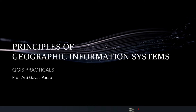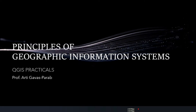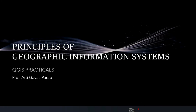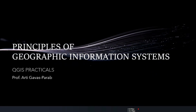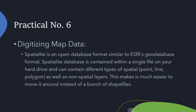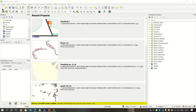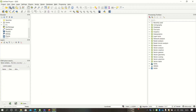Hello friends, welcome to the principles of geographic information system practicals. These practicals are performed in QGIS software. Today's practical is to digitize the map data. Here we are going to use some image file, and taking reference of that image file we are going to create a SpatiaLite layer.